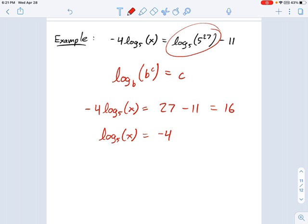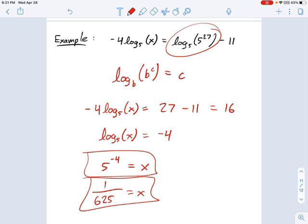Now we're going to turn this into an exponential and say 5 to the negative 4 equals x. You can leave that as a solution. If you want, you could write it as 1 over 625 equals x. These are equivalent statements, and that's the solution.